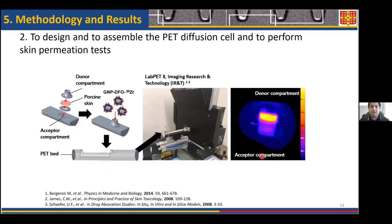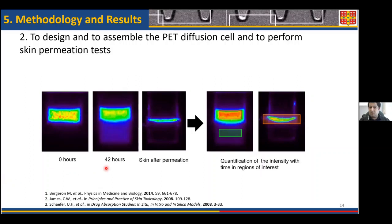Once radiolabeling was complete, we moved to the permeation experiment. The diffusion cell was designed as shown and fitted with porcine skin, which is a known substitute for human skin. The nanoparticles were added to the donor compartment, the cell was closed and inserted inside the positron emission tomography, and visualized continuously for up to 42 hours. After 42 hours, the solutions inside the donor and acceptor compartments were emptied and the residual activity inside the skin was measured. Image analysis was performed to investigate the change in intensity in the donor and acceptor compartments versus time, and to quantify the amount of intensity remaining in the skin after 42 hours.